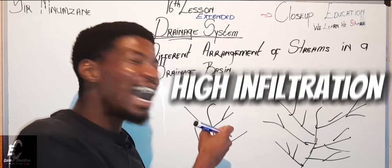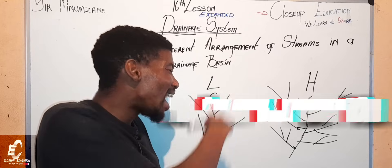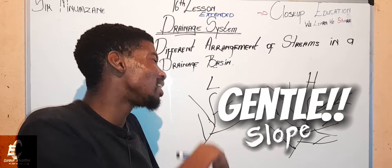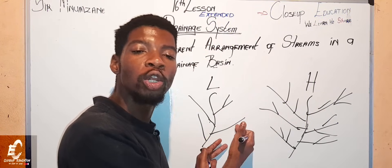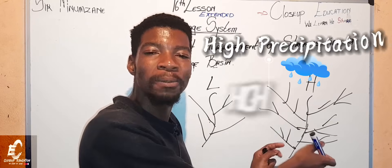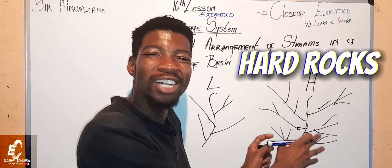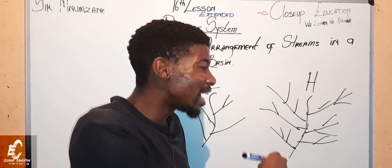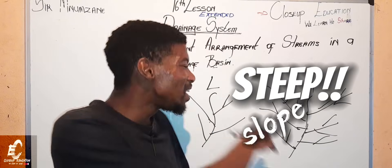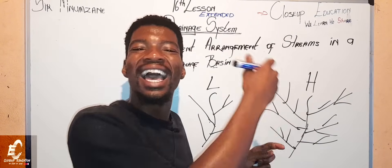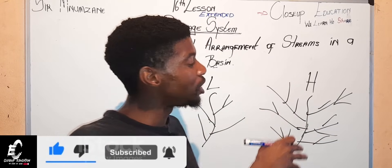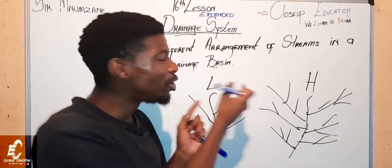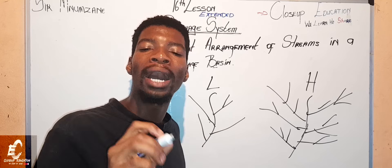High drainage density is the opposite: high precipitation, hard rocks meaning less infiltration, a steep area with many streams, and less vegetation to absorb the water from precipitation. This is how you differentiate high density from low density.